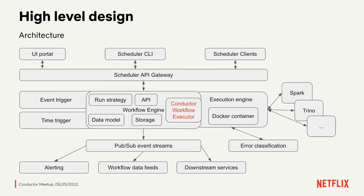Every state change or event triggers the scheduler to send an event to this stream, and downstream services subscribed to those streams react accordingly — for example, alerting. We also have an error classification service which monitors all job executions and, based on a rule engine, determines whether a failure is a user failure or a platform failure, giving insights or hints to the scheduler to decide whether to restart a job or not.